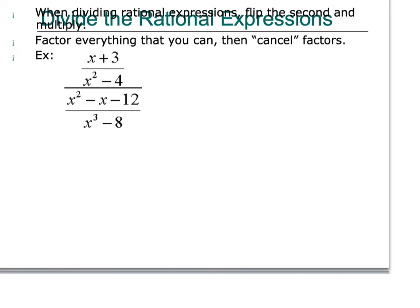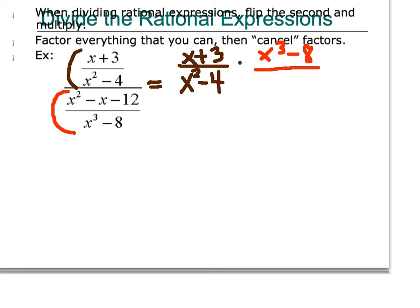Alright, this next one, dividing, is very similar to multiplying. Except, remember, when you're dividing a fraction, you flip the second and multiply. So, our first step here is going to be rewriting this. I have the numerator, x plus 3 divided by x squared minus 4. And now, I'm going to multiply by the reciprocal of the denominator. So, x cubed minus 8 divided by the trinomial x squared minus x minus 12.